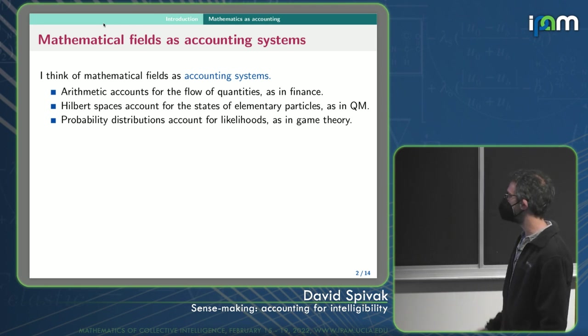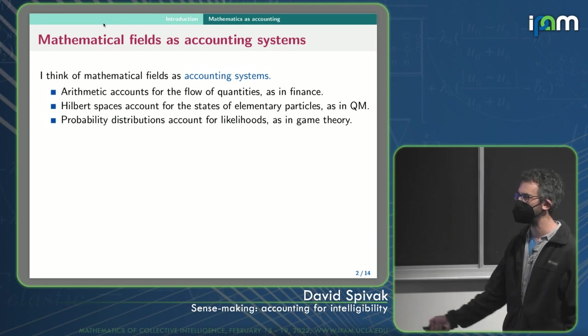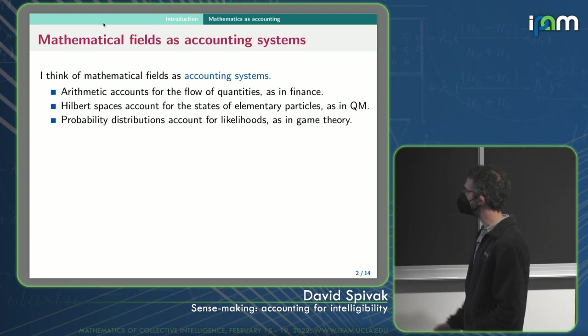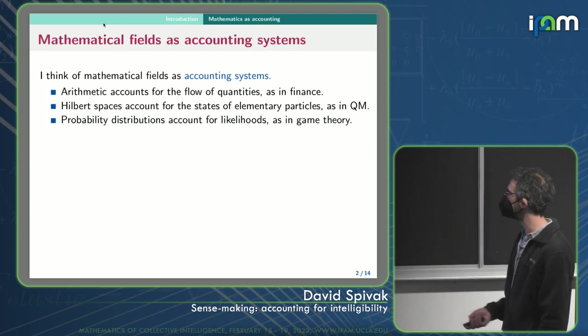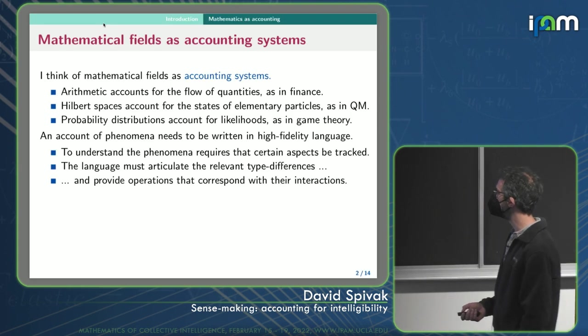And probability distributions, if you want to account for why this person's winning at poker, it's because this hand is more likely than that hand.